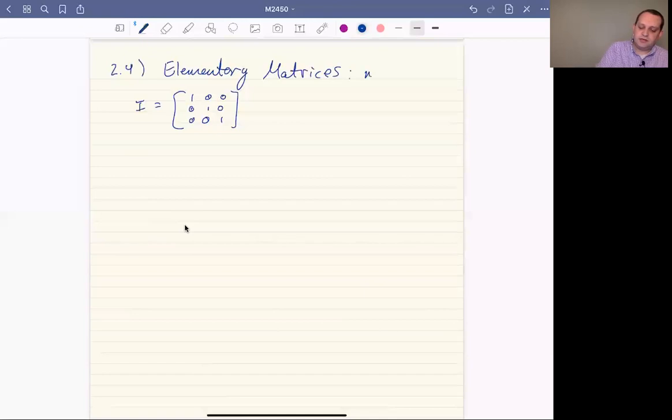And elementary matrices are matrices that are one row operation. So I like to think of these as, there's a more formal definition, but this is what they are. They're matrices that are one row operation away from the identity matrix.